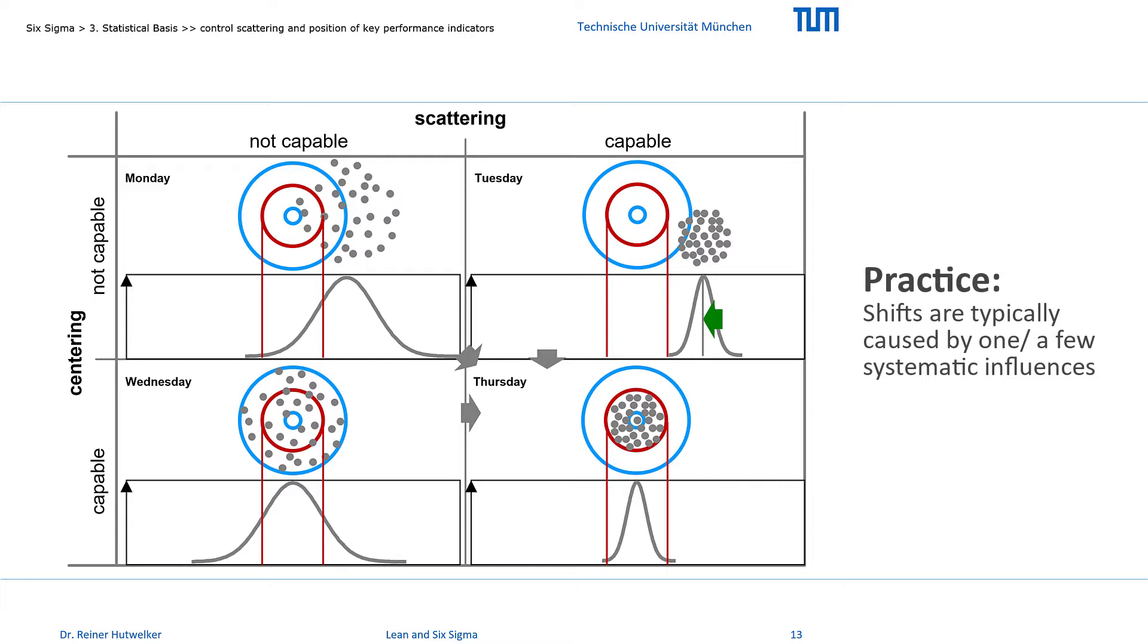Systematic influences in the process, like for example shifts, are indicated in control charts. Scattering, however, is almost always caused by an interaction of a multitude of influences. This is the basis for the normal distribution in many application areas. Think of the complex influences, that for example determine the human body size. And it is not always easy to identify and control these influences.